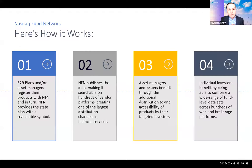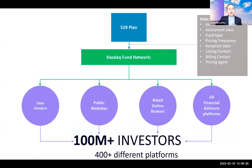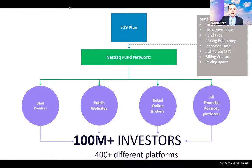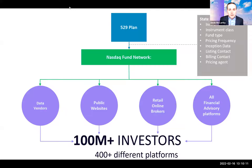When you look up a mutual fund on any platform, that platform is a subscriber to the NASDAQ Fund Network — that shows you how large our distribution really is. At the top we have the 529 state plan, which uploads key fields and registers with the NASDAQ Fund Network. We then assign a customized five-character ticker symbol to that state plan's share classes and publish that downstream to data vendors, public websites, retail online brokers, and all financial advisory platforms.